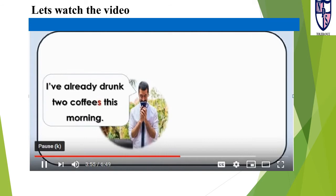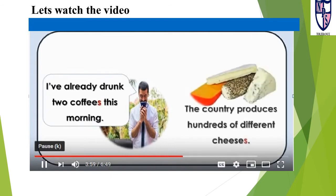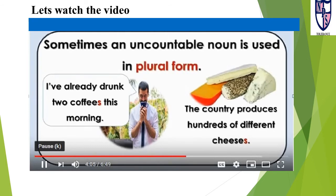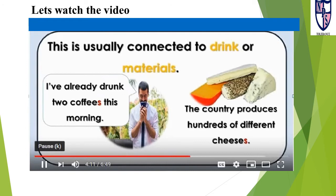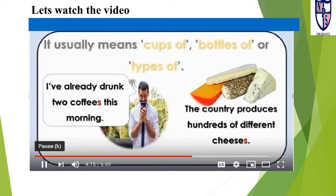Sometimes an uncountable noun is used in plural form, for example: I've already drunk two coffees this morning; the country produces hundreds of different cheeses. This is usually connected to drinks or materials, and it typically means cups of, bottles of, or types of — for example, cups of coffee.